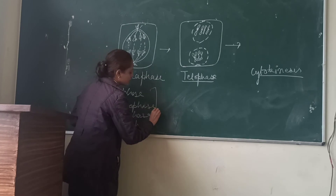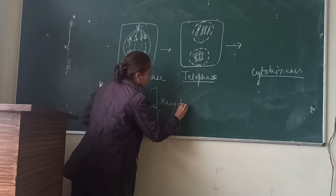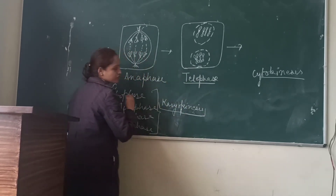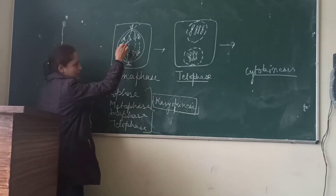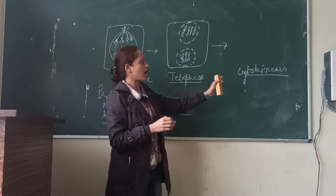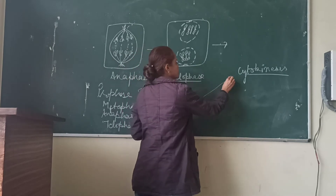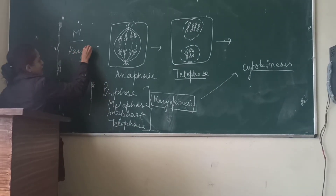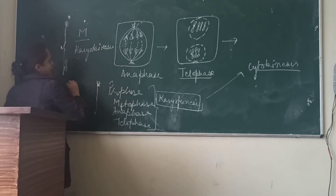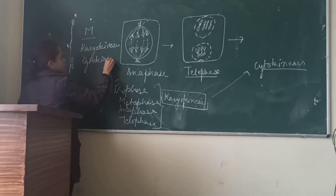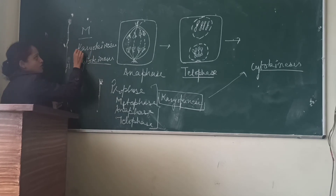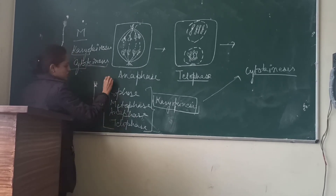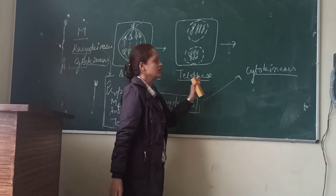All the stages — prophase, metaphase, anaphase, and telophase — are collectively known as karyokinesis. Karyos means nucleus and kinesis means division, so all these divisions were taking place in the nucleus. As the nucleus divides, the cytoplasm also divides, which is known as cytokinesis. Mitosis therefore has two main phases: karyokinesis, which is the division of the nucleus, and cytokinesis, which is the division of the cytoplasm.